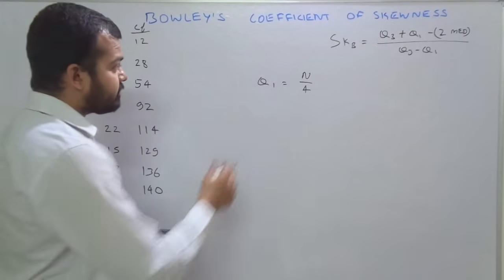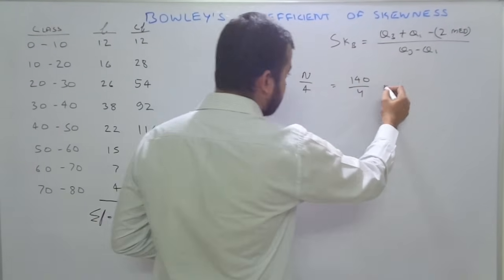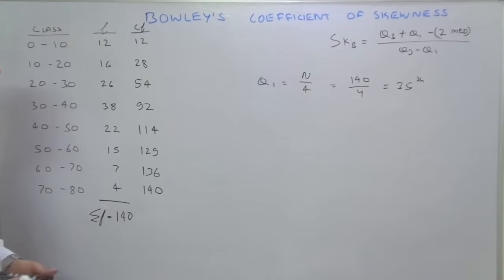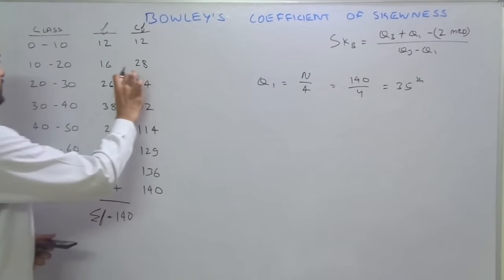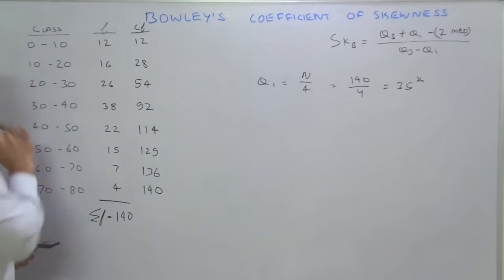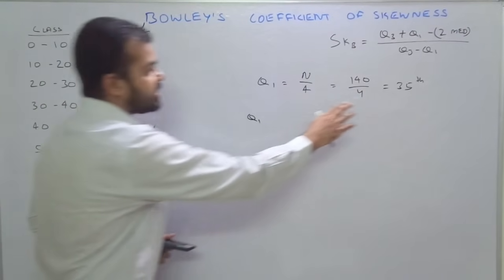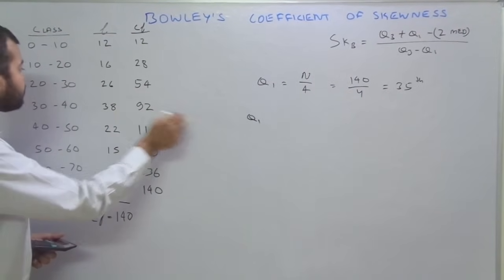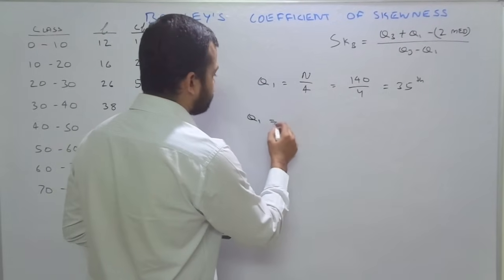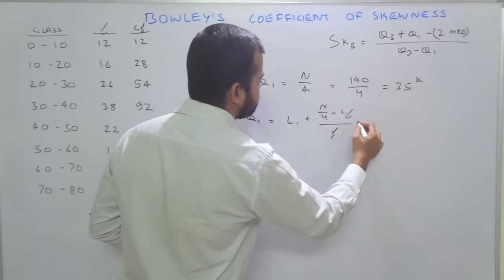Now we calculate N by 4, which is 140 divided by 4, giving 35. We look for the 35th item in the cumulative frequency column. The 35th item falls under the class where cumulative frequency is 54, so the 35th item is between 20 and 30. To find the exact value of Q1, we apply the formula: L1 plus (N by 4 minus Cf) divided by F, multiplied by I.